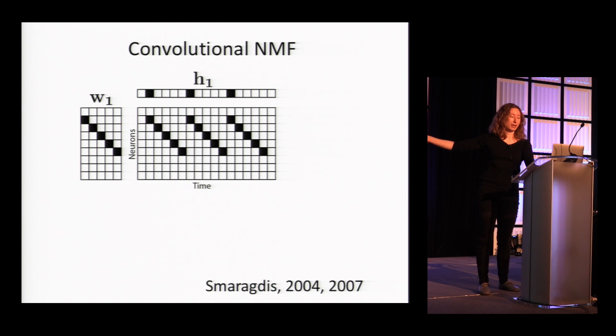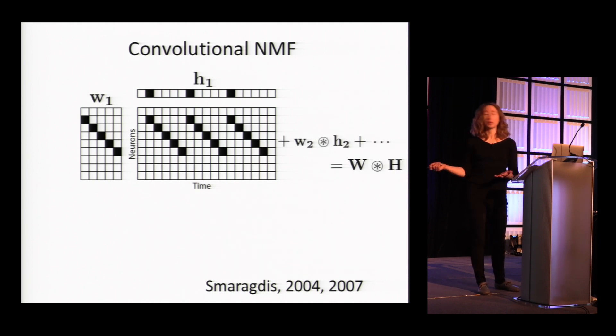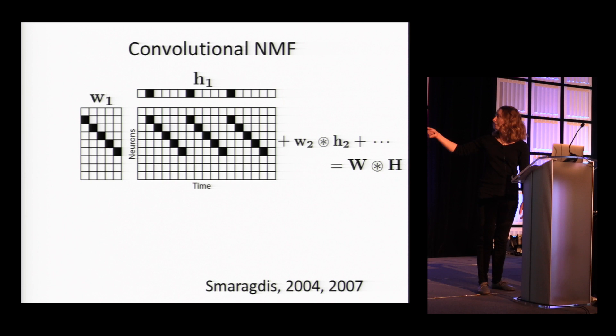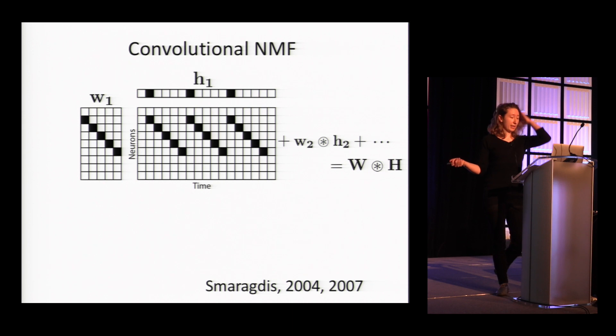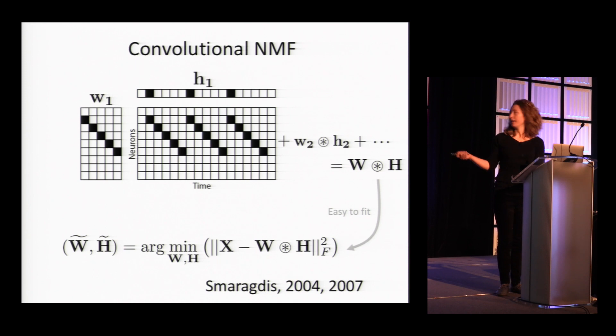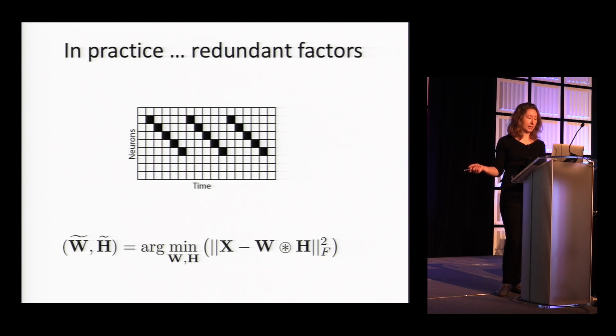It's a similar picture. Now this pattern is convolved with this temporal activity to produce the data matrix. This was developed by Paris Smaragdis and is called convolutional NMF. Here, we can also generalize to multiple temporal patterns and factorize the data in this way. So this algorithm is really great and almost exactly what I wanted for my data. It's fairly easy to fit by minimizing this cost function. You can find the patterns and time courses that best fit your data, minimizing reconstruction error.